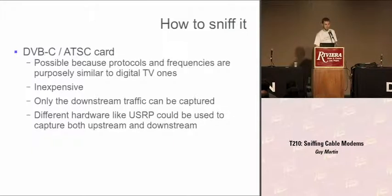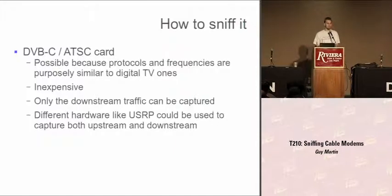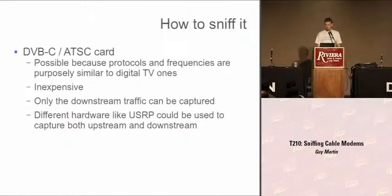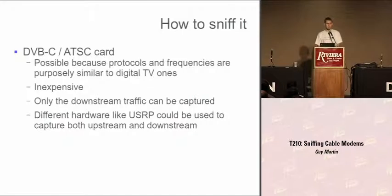How to sniff it — what you need is a TV card, a digital TV card: either an ATSC card or a DVB-C card. DVB-C you'll find in Europe; it has more advantages like different symbol rates. In the US you use ATSC, and in Europe DVB-C — you can sniff everybody. This is possible just because they engineered DOCSIS to use the very same frequencies. The price of this card is $100, so everybody can afford it. One downside: you only have the downstream because the upstream is at a different frequency below 50 MHz that those cards can't handle. But the downstream is way enough — you can do a lot of stuff already.